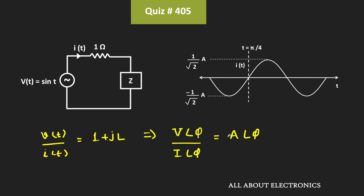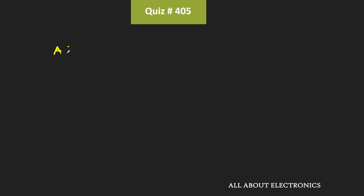So in this case, we know that the amplitude of the voltage signal is equal to 1 and its phase is also equal to 0. Likewise, if you see the waveform of the current, then its amplitude is varying between ±1/√2. That means its amplitude is equal to 1/√2 ampere. And as you can see, its phase is equal to −π/4, because the current is lagging the voltage by π/4. And that should be equal to the impedance of the given circuit. So if we further simplify it, we can write A = √2 ∠π/4. That means the amplitude of this impedance is equal to √2, while its phase is equal to π/4.